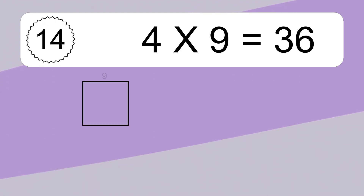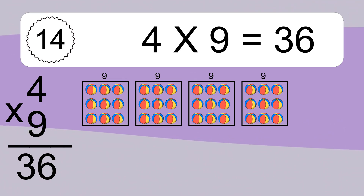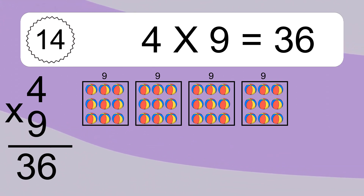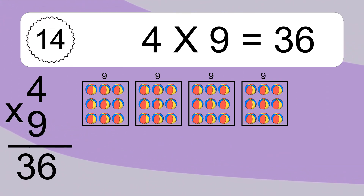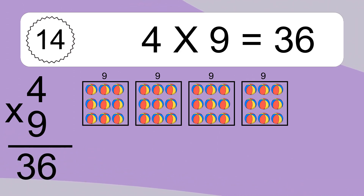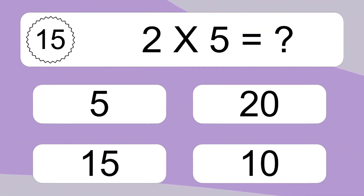4 times 9 equals what? 4 times 9 equals 36. We have 4 boxes, and each box has 9 colorful balls inside. If you count all the balls in all the boxes together, you will have 4 times 9 balls. This equals 36 balls.